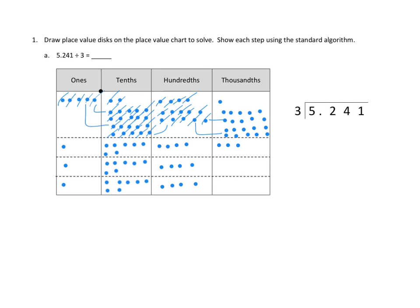We place seven in each of the three groups, accounting for all twenty-one thousandths. At the end of the day, each of these groups has one, seven-tenths, four-hundredths, and seven-thousandths. So our answer is one-thousand-seven-hundred-and-forty-seven thousandths, or 1.747.